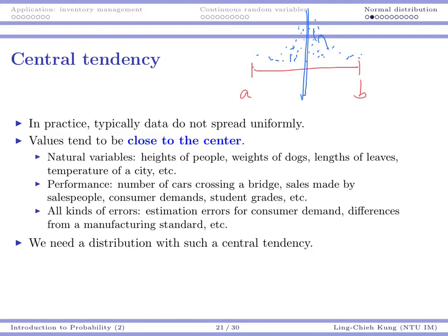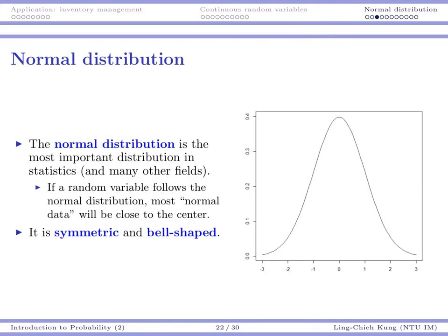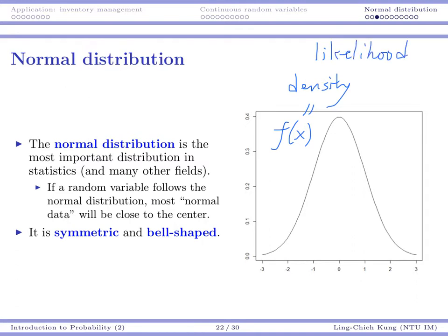We need a distribution that has this kind of central tendency — where most values are close to the center. That's normal distribution. Normal distribution has that property. A normal distribution looks like this: there is a center, and most data locate around the center. This particular curve is the PDF of the normal distribution, and the PDF basically measures the density or the likelihood for each value to occur.